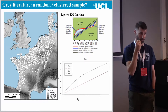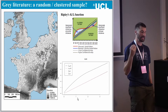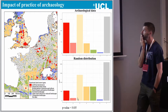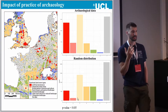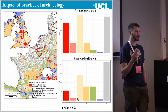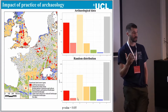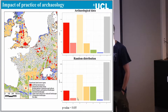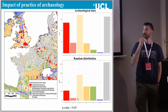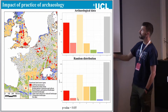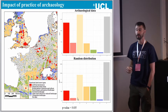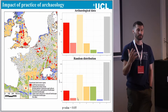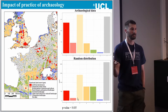One thing that probably explains the patterning is that as archaeologists we excavate specific parts of the landscape — especially in commercial archaeology, because we go where the economy is. This shows a classification of land types: artificial urban areas, agriculture, and so on. The distribution of my dataset versus a random distribution are totally different, and the p-value is significant. We are creating a sample which is not representative of the landscape as it stands.